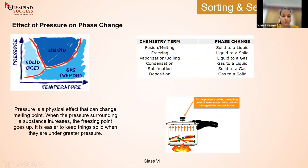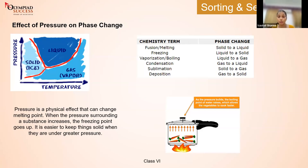Effect of pressure on phase change: pressure is a physical effect that can change the melting point. When pressure surrounding a substance increases, the freezing point goes up — it is easier to keep things solid under great pressure. When solid turns to liquid, that is called melting. The opposite — lowering temperature so liquid turns to solid — is called freezing. Heating liquid so it goes into the atmosphere is vaporization or boiling.